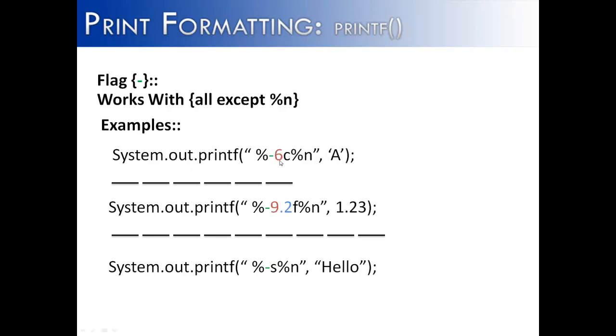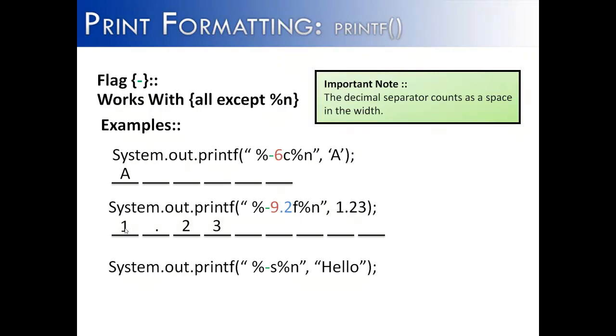C, we have six spaces, left justified, puts the A there. And then we have nine spaces with the floating point. And remember from previous videos, when you use width, the decimal point will take up one of those spaces. So we see 1.23 left justified.